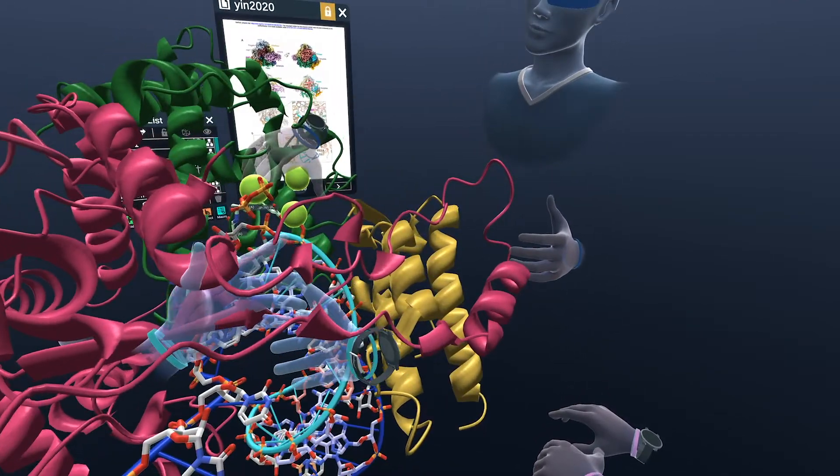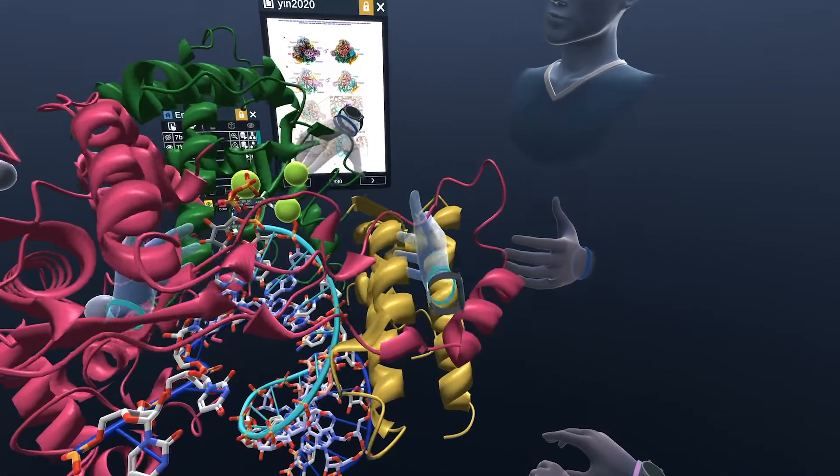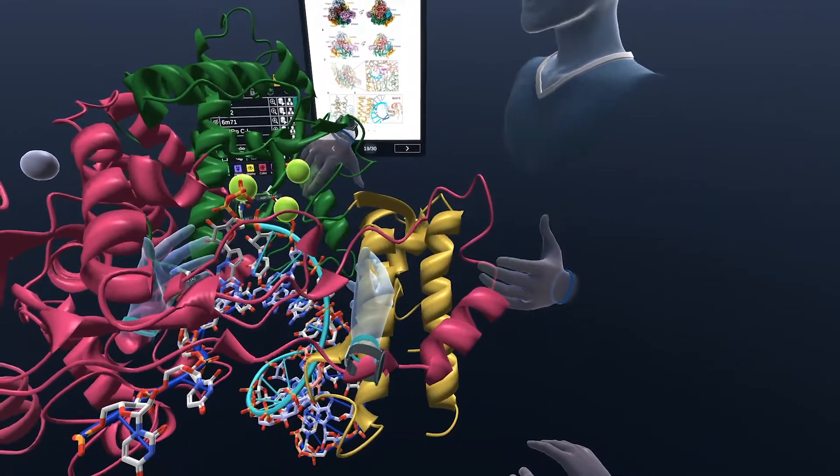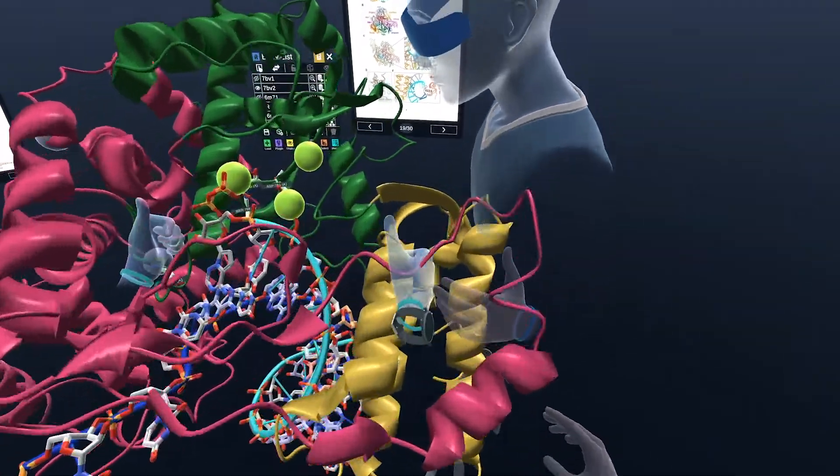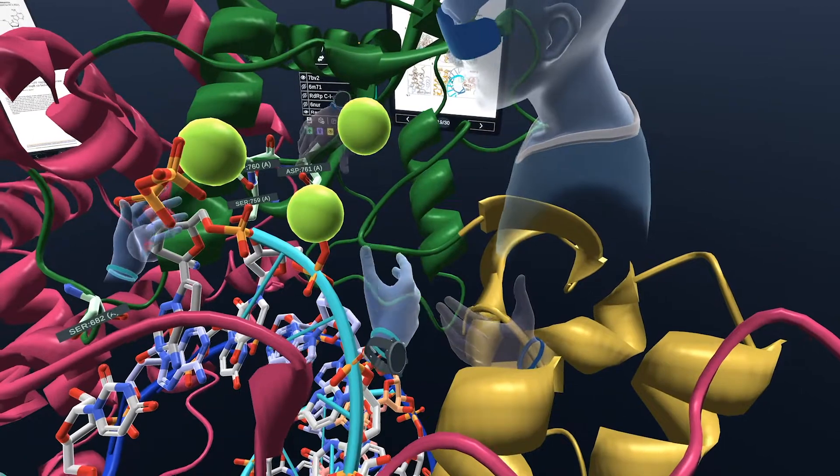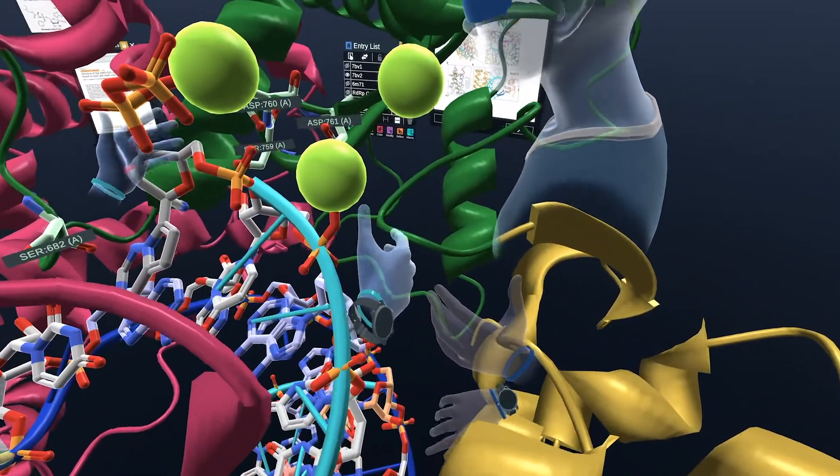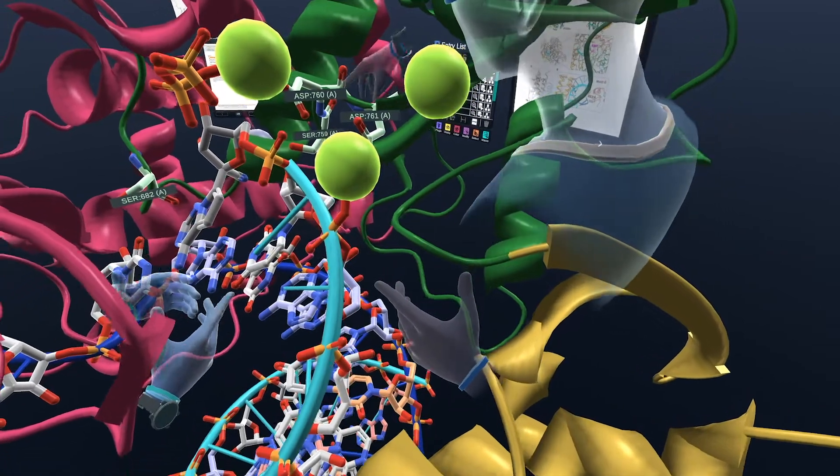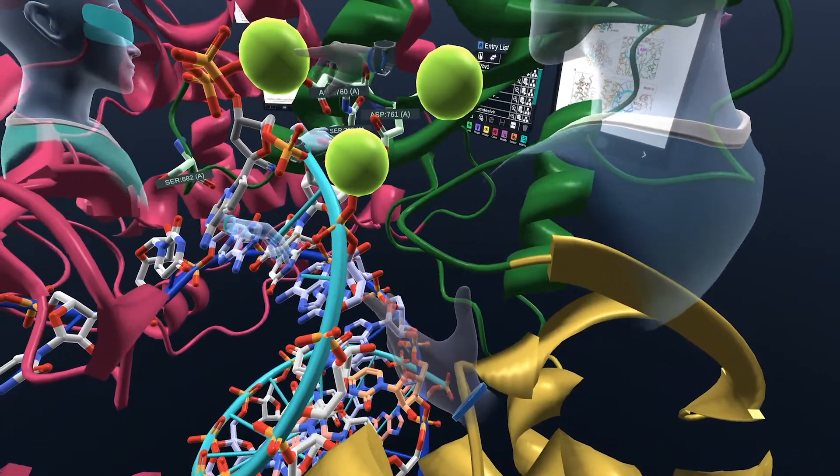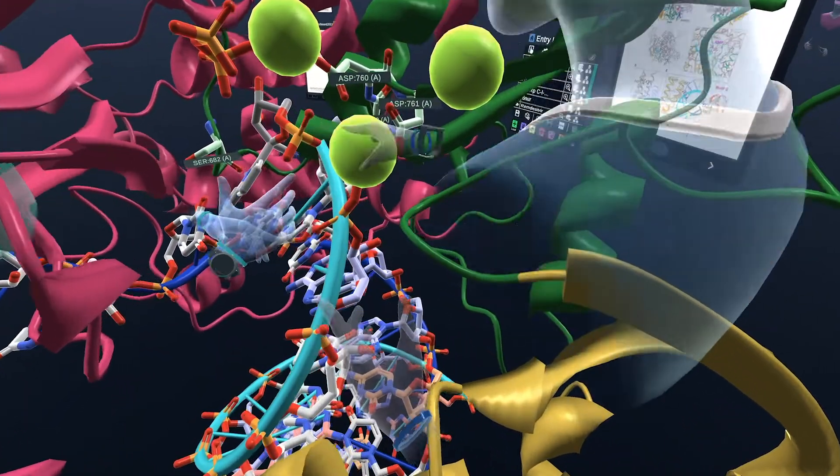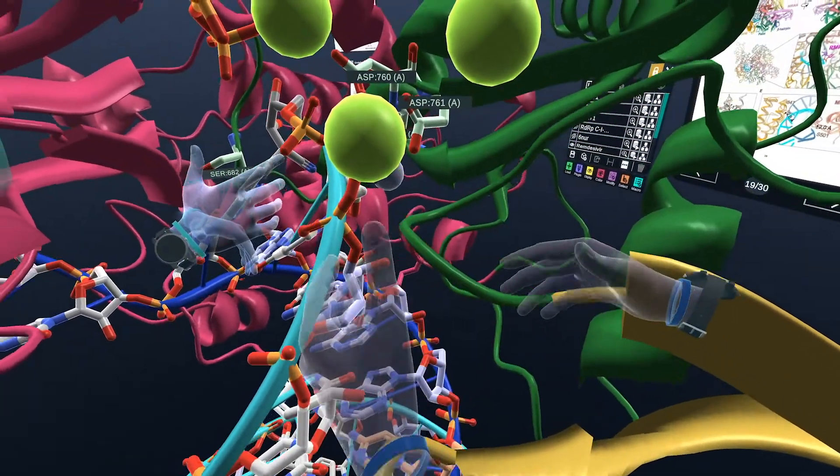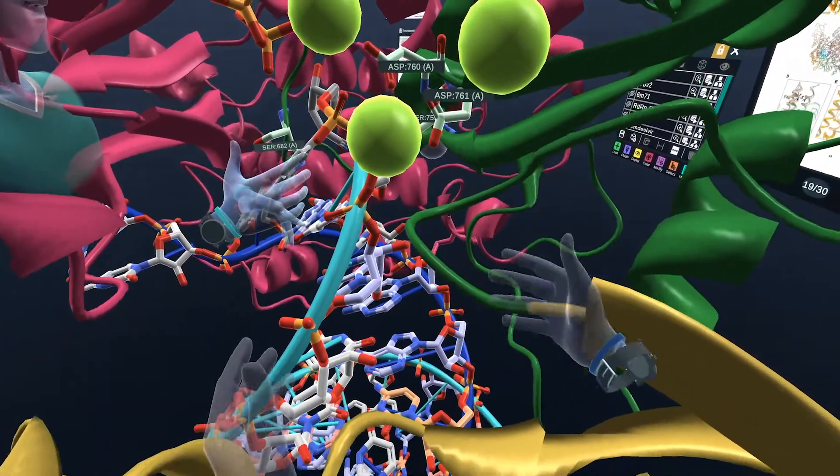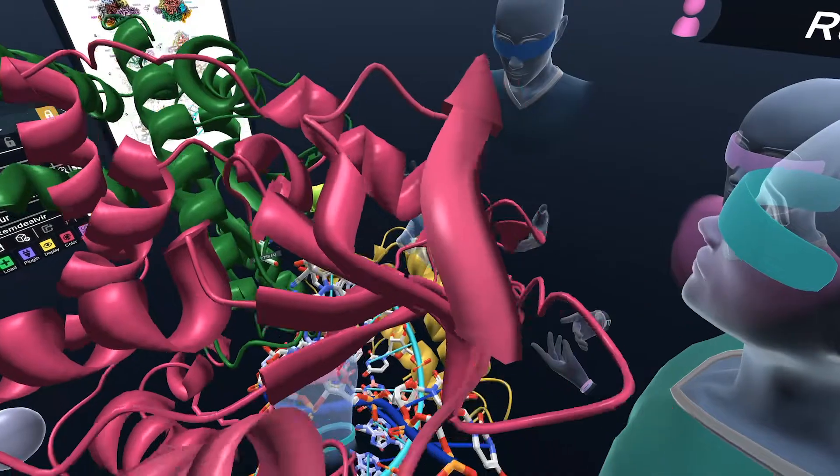So we have these three magnesium atoms here that are coordinating the active site, catalytic active site, I should say. And we see these three residues here that are critical. We have a serine and two aspartic acids over here. So those three are interacting with the magnesium and here with the residue. And yeah, that's the active site.